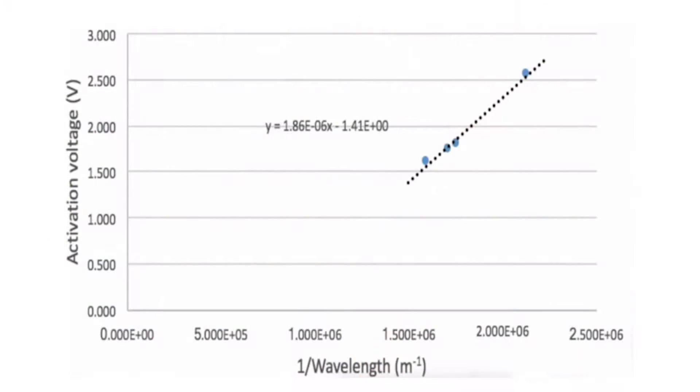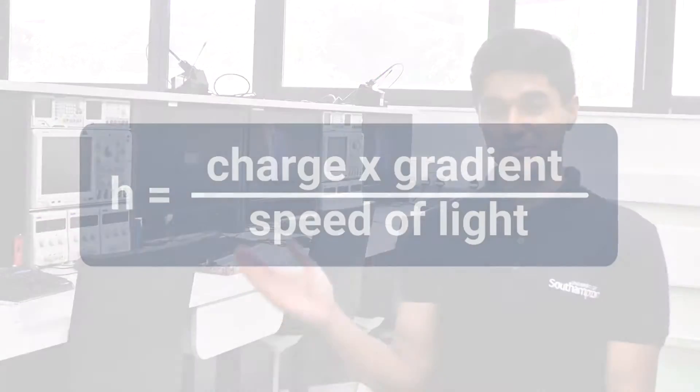If you manage to get good results, your graph should be linear. You can calculate the value of Planck's constant by calculating the gradient of your line and the y-intercept. The formula for Planck's constant is this formula.